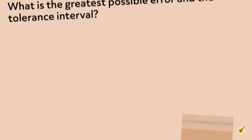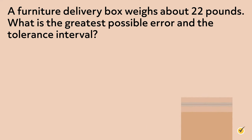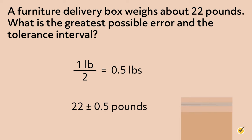Now it's your turn. A furniture delivery box weighs about 22 pounds. What is the greatest possible error and the tolerance interval? Pause the video and see if you can do this one by yourself. First, we need to identify the unit of measurement, which is one pound. The greatest possible error is one-half of the unit of measurement, which is 0.5 pounds. Therefore, the tolerance interval is 22 ± 0.5 pounds.